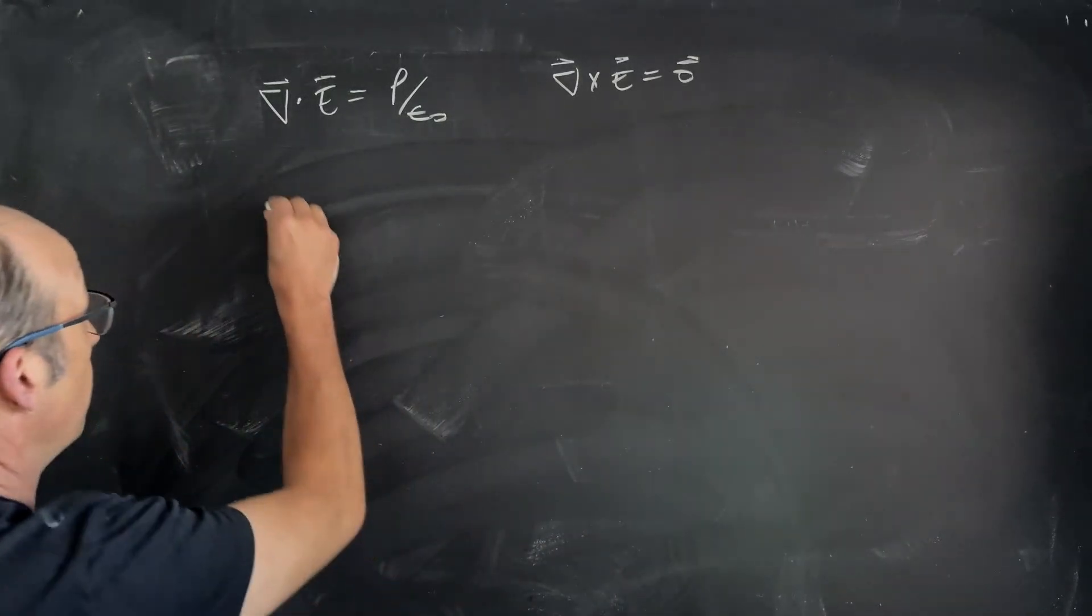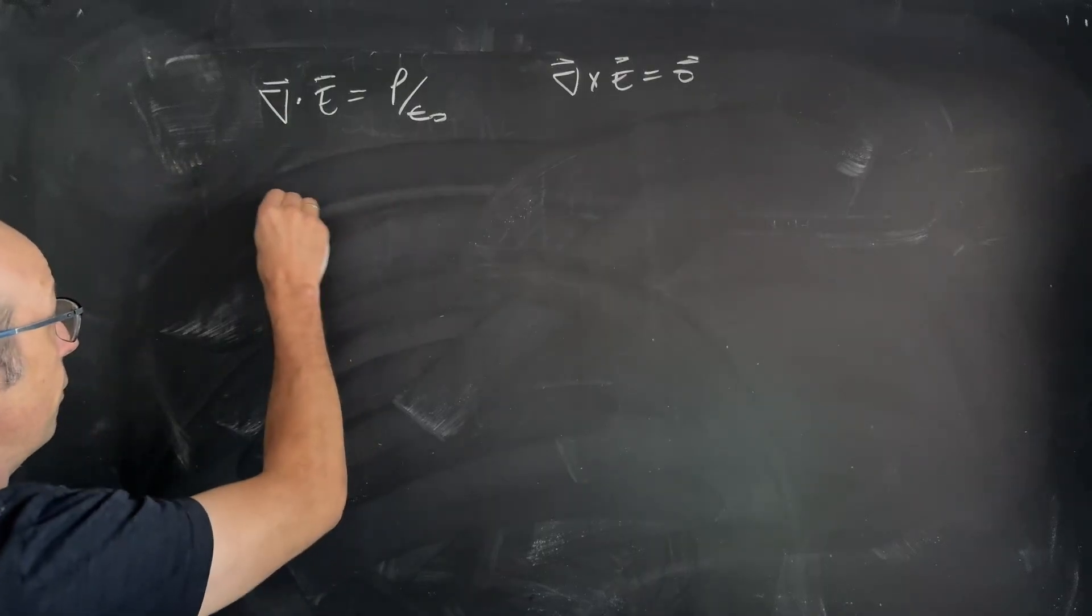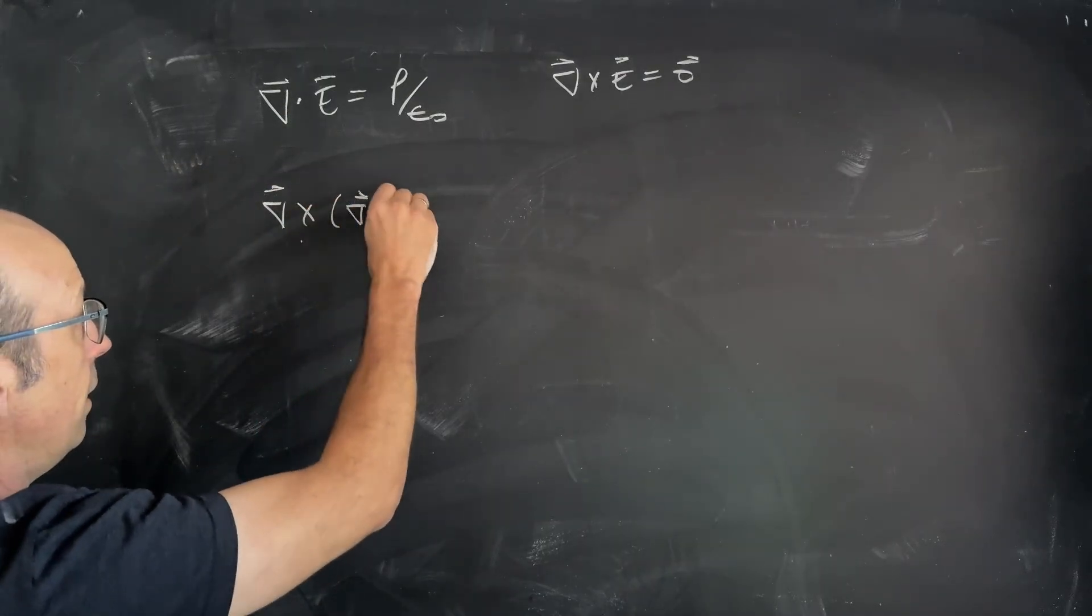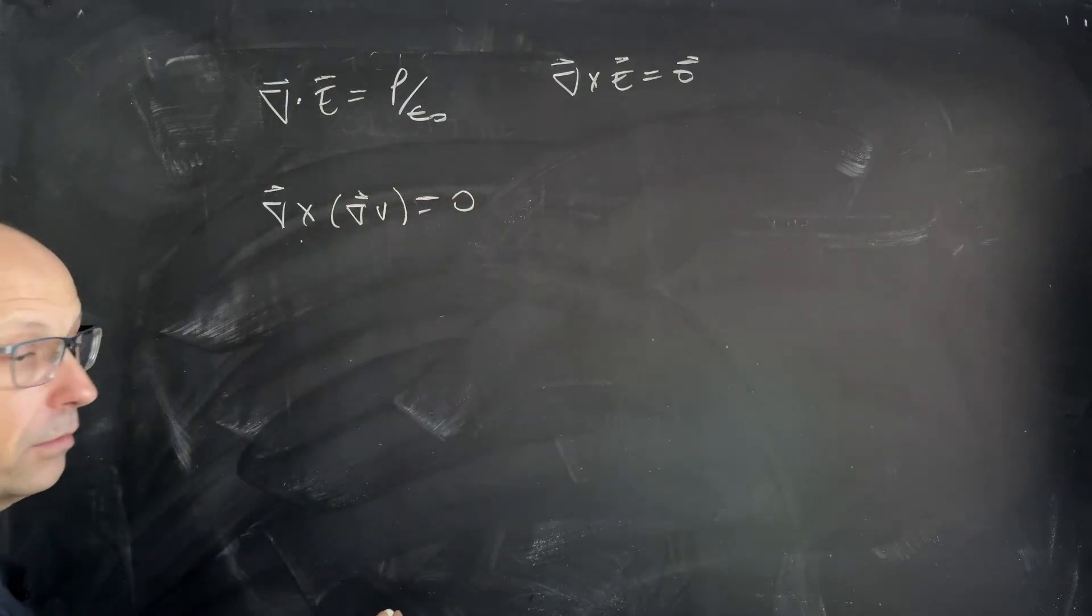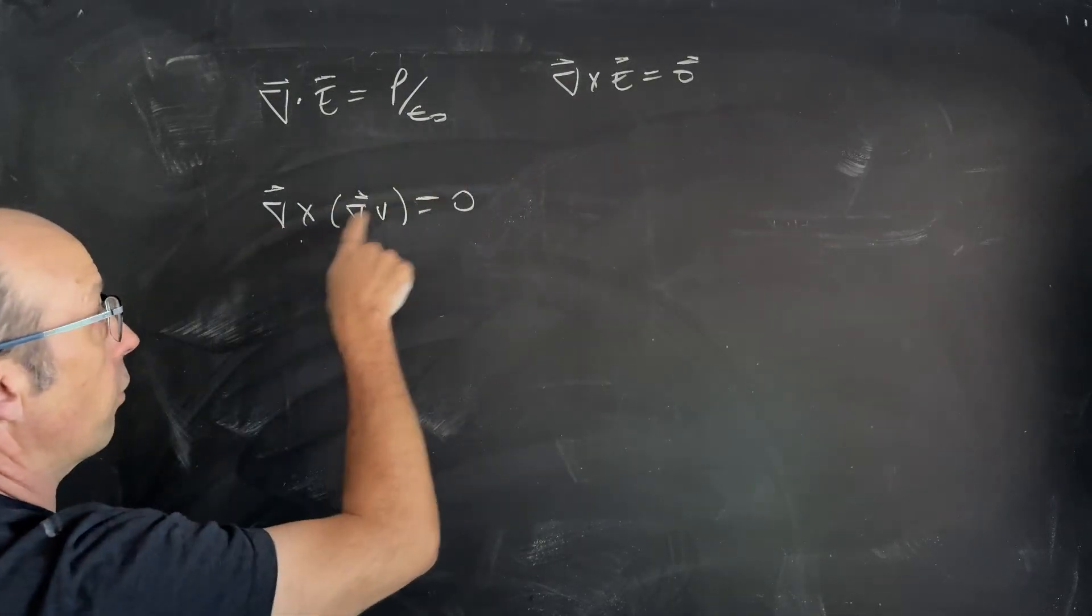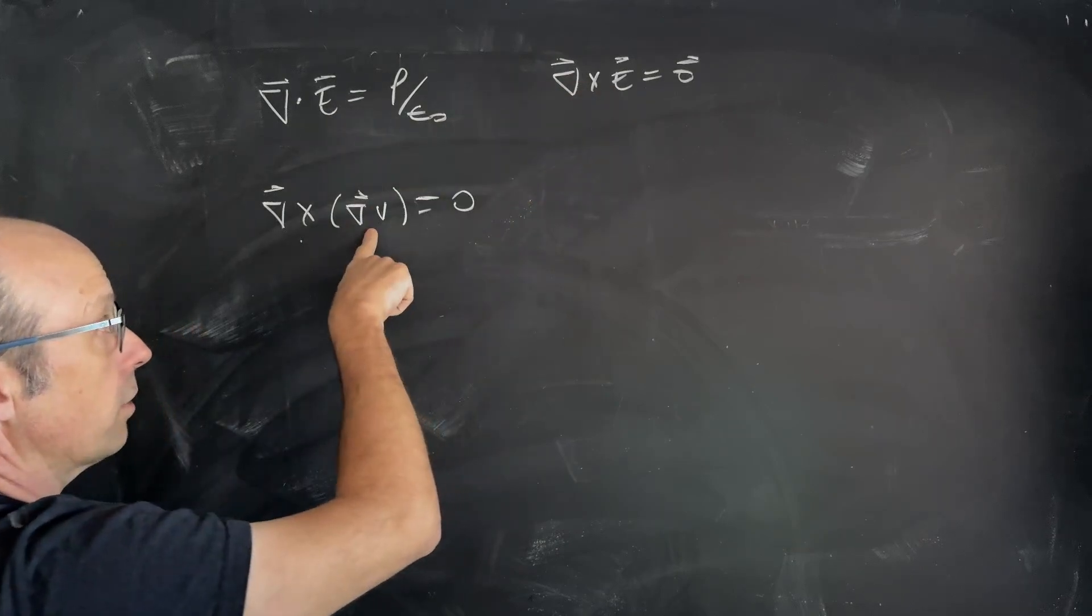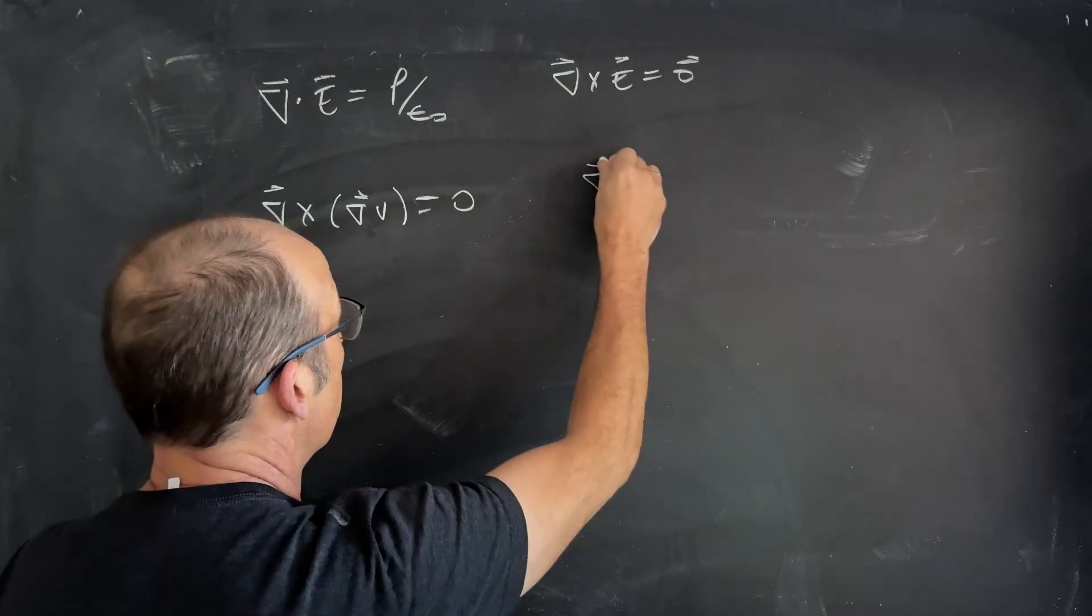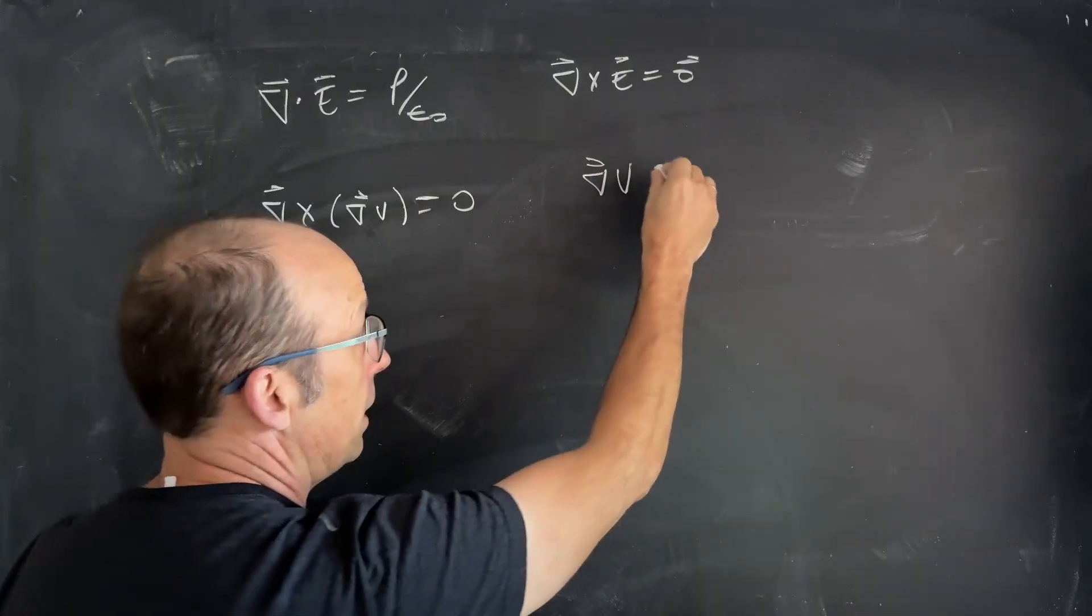So, there's a vector identity that says Del cross Del V is equal to zero. Well, if that's the case, then I can just say, oh, well, Del cross E, the curl of E is zero. So, I can say E is that by the vector identity. So, Del V, the electric potential, is E.